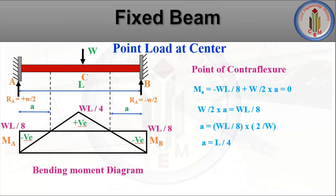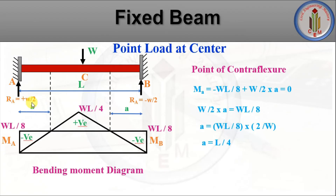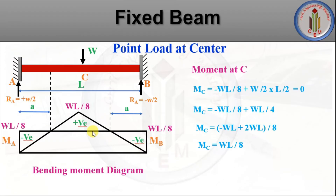Next, let's find the point of contraflexure — the point where the bending moment changes sign from negative to positive. Taking the distance from A to this point as 'a', we set the moment equal to zero: −WL/8 + (W/2) × a = 0. Solving, a = L/4. Since the load is symmetrical, the point of contraflexure is also at L/4 from each end.